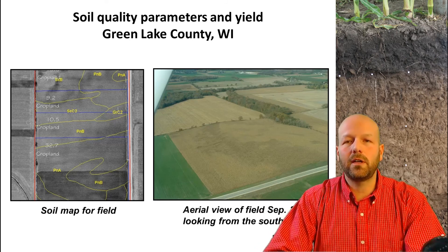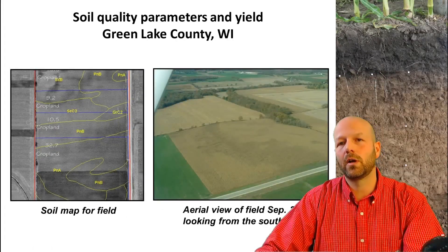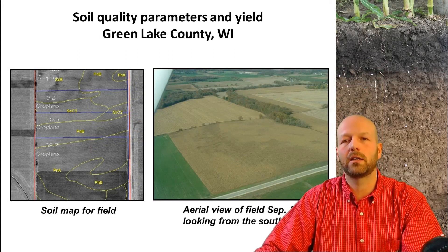Soil health is very important because it affects productivity, water quality, and so many different things in the environment and production system. Here's an example of a field — you can see the variability on the map on the left, and on the flyover you can see that different zones with different soil qualities greatly affect the productivity of the field. What we're talking about is the same management principles, but now we're looking at it as a whole package — fertility, tillage, and biology together — and how that's all affecting production and soils. Hopefully that will lead to more sustainable productivity and more resilient soils. Healthy soils usually lead to a greater buffer capacity, for things like drought.